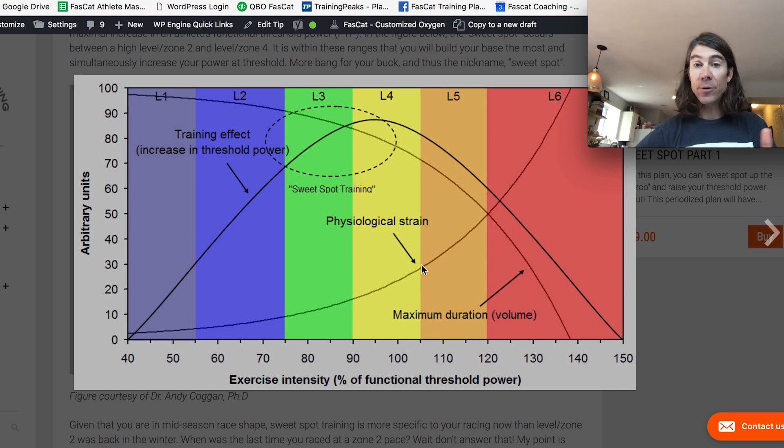Now let's go back to the adaptations. You achieve a lot of physiological adaptations as represented by this parabola here from training in zone two, more in three and four, and it tops out in threshold training right here. So you get a lot of physiological adaptations.